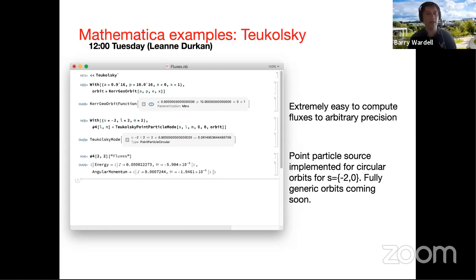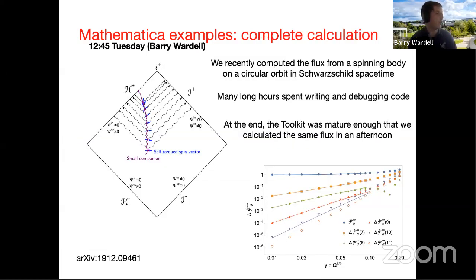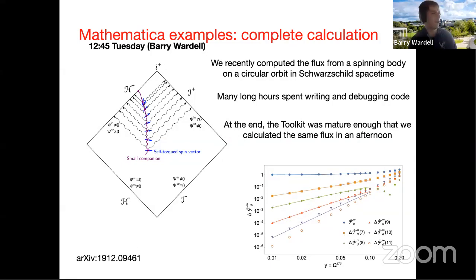Tomorrow's session will walk through a more extended example showing how to do these calculations if they weren't already built into the toolkit. The toolkit currently supports the case of a point particle around a Kerr black hole. Barry will lead participants through a calculation for a spinning body in orbit around a Schwarzschild black hole — a calculation that originally took many hours but was reproduced using the toolkit in an afternoon.